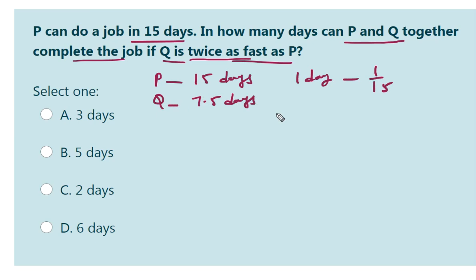What is the 1 day work of Q? 7.5 means 15 by 2, so it's 2 by 15.